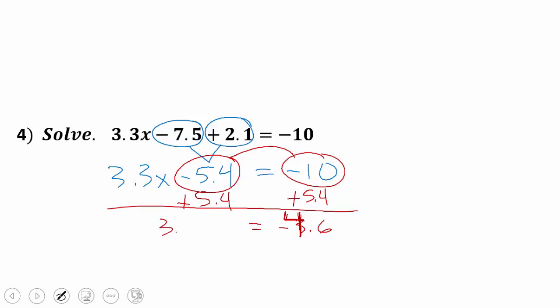And so now 3.3x = −4.6. Now I'm in a one-step equation where I'm multiplying. So the inverse operation would be to divide by 3.3. And negative 4.6 divided by 3.3 gives me negative 1.3. So combining like terms, looking at it in a little bit different way, but combining like terms, whether they're on the same side or opposite sides, and we're going to talk a lot about more of that later on.